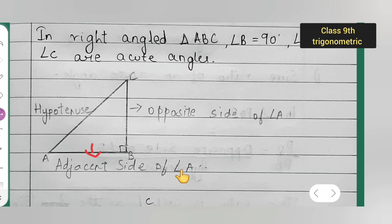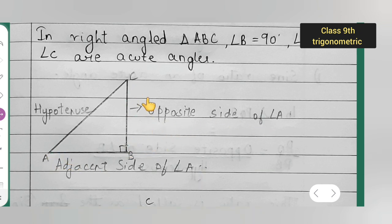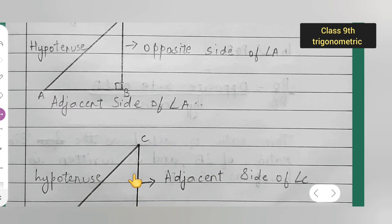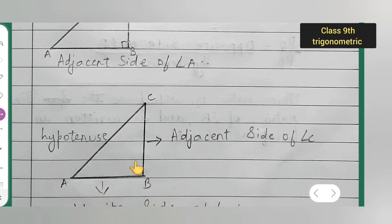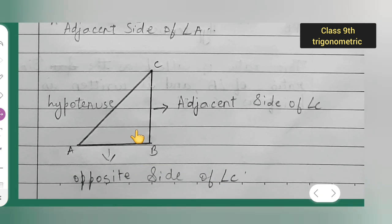This will be the adjacent side of angle A and this is the opposite side of angle A. For angle C: this is the adjacent side of angle C, this is the hypotenuse, and this is the opposite side of angle C.